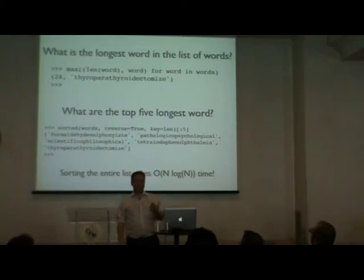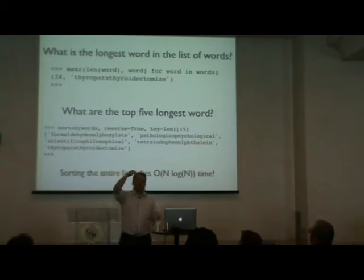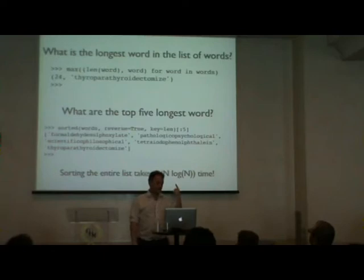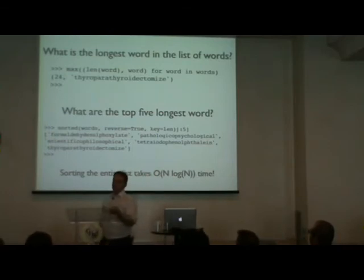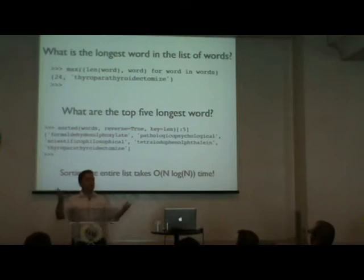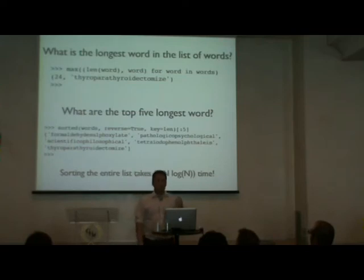max() finds the largest item — in this case a tuple, so it maximizes the first element (length) and breaks ties by the second (the z-most word). This gives the last longest word. Running this, I get a 24-letter word I can barely pronounce. Now a harder question: what are the five largest words? You could sort the entire list and grab the first five elements, but that means sorting hundreds of thousands of words just to keep five.